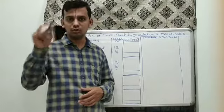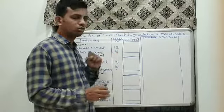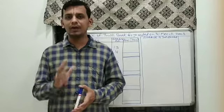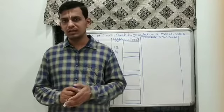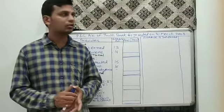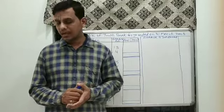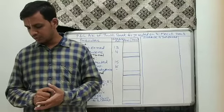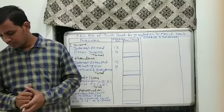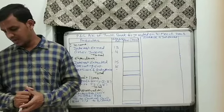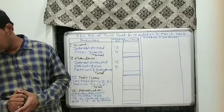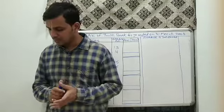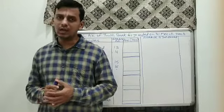Today we will talk about the solution. In short, the question gives a bank's trial balance details. Along with that, three adjustments are provided: first, provide for contingencies 2 lakh; second, transfer to reserves 15,57,000; and lastly, transfer 2 lakh to the central government. We have been asked to prepare the P&L account.